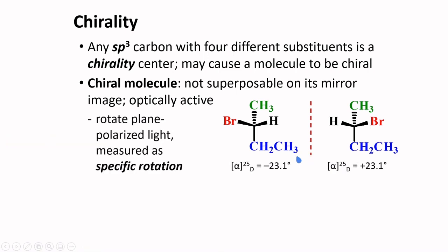Chiral molecules are optically active. They rotate plane polarized light, measured as specific rotations. Plane polarized light are light that propagates in only one plane. Light passing through chiral molecules will be rotated in a certain way, and this rotation can be measured in a polarimeter, usually at 25 degrees Celsius and the D-line of sodium.